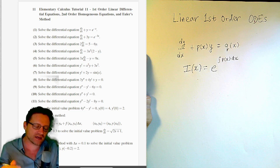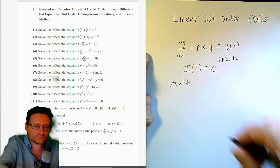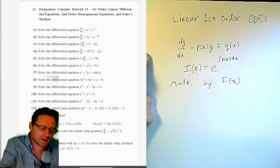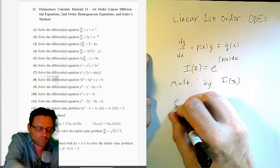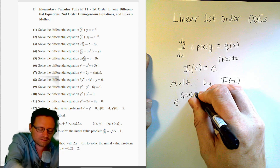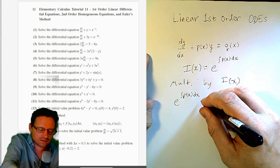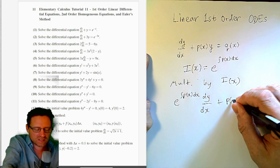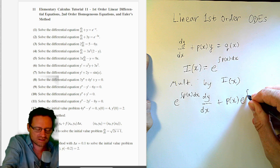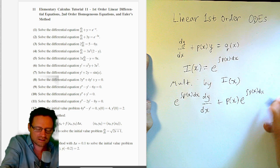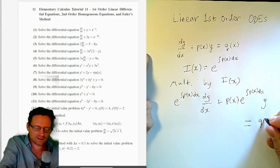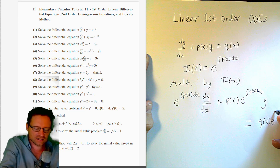Once you have the integrating factor, you multiply by it. This gives: e to the integral of p(x) dx times dy/dx, plus p(x) times e to the integral of p(x) dx times y, equal to q(x) times e to the integral of p(x) dx.